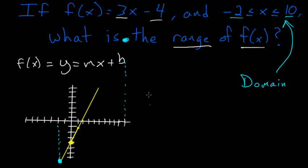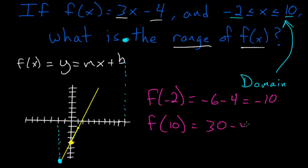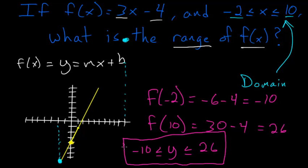f(-2): we've plugged -2 in here, we have -6 - 4, which is -10. And f(10) would be 3 times 10, which is 30, minus 4, equals 26. So we can say that y is less than or equal to 26 and greater than or equal to -10, and this here is the range of our function.